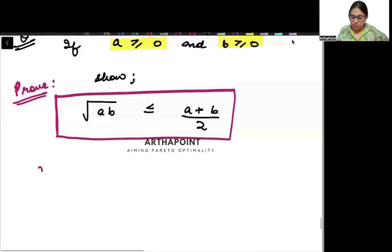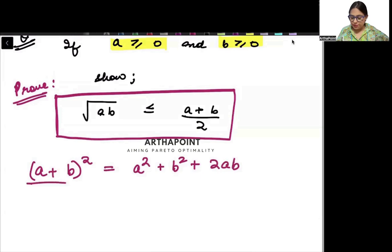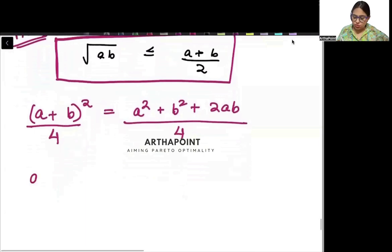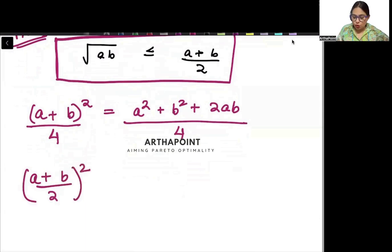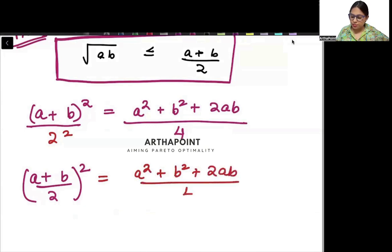We know that (a plus b) whole square is equal to a square plus b square plus 2ab. What we will do is divide by 4 on both sides. When we divide by 4 on both sides, I will get (a plus b by 2) whole square. Since 4 is nothing but 2 square, I can say (a plus b by 2) whole square is equal to (a square plus b square plus 2ab) divided by 4.